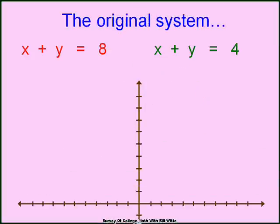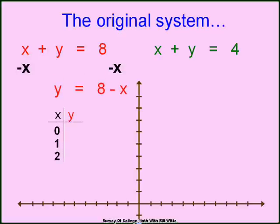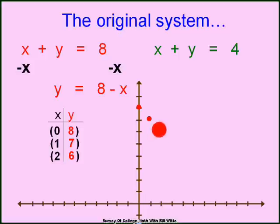Well, if we took the original lines — x plus y equals 8 and x plus y equals 4 — let me show you why that would be true. If I asked you to graph them, you'd solve for y. Solving the first one for y and putting in 0, 1, and 2: if I put in 0 I get 8, so I get the point (0, 8); put in 1, I get 7, so I graph (1, 7); put in 2, I get 6, so I go over 2 and up 6. And I graph that one correctly — they line up.